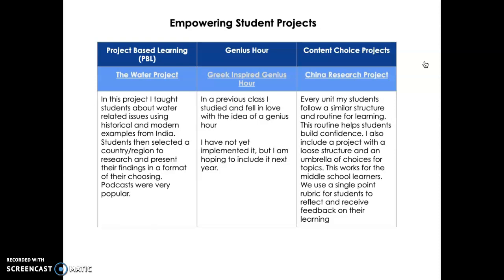For every unit, I also do a content choice project — I have a link to our China research project. I follow a similar structure with every unit: we do visual vocabulary, mapping, a web quest, we build the background knowledge, and then I ask students to make an artifact of their choosing. This is really important for students because it helps them develop skills around making choices, which in middle school is a really important skill.